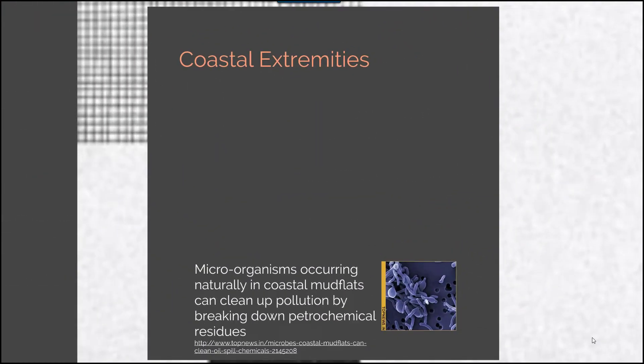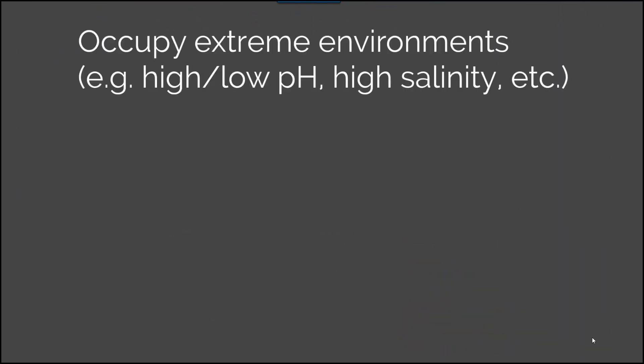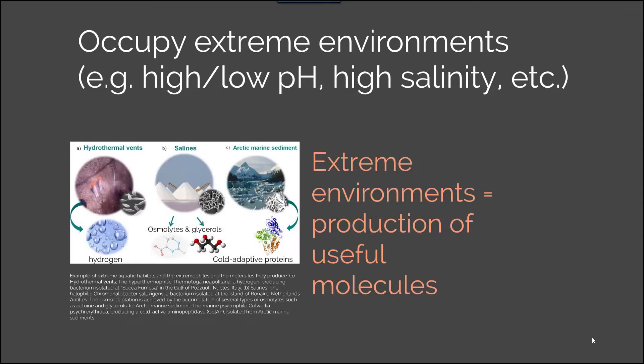There are some coastal extremities when it comes to these organisms and their habitat. They can occupy extreme habitats where there's either a low or a high pH level, a high salinity, and so on. When they do occupy these extreme environments, they require the production of different molecules to support their survival. Within hydrothermal vents, organisms have to have a higher production of hydrogen, as an example. Saline organisms that live in saline environments are going to have higher levels of osmolytes and glycerols — different types of structures that are important for their survival.